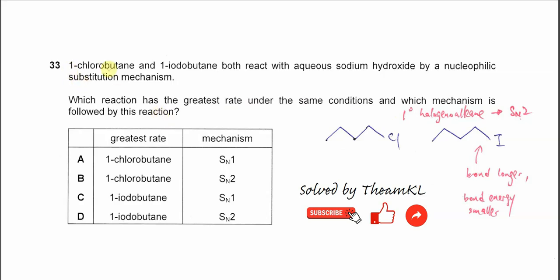1-chlorobutane and 1-iodobutane are both primary haloalkanes. The carbon with the halogen only has one alkyl group attached to it. So both are primary haloalkanes and they will undergo SN2 mechanism.